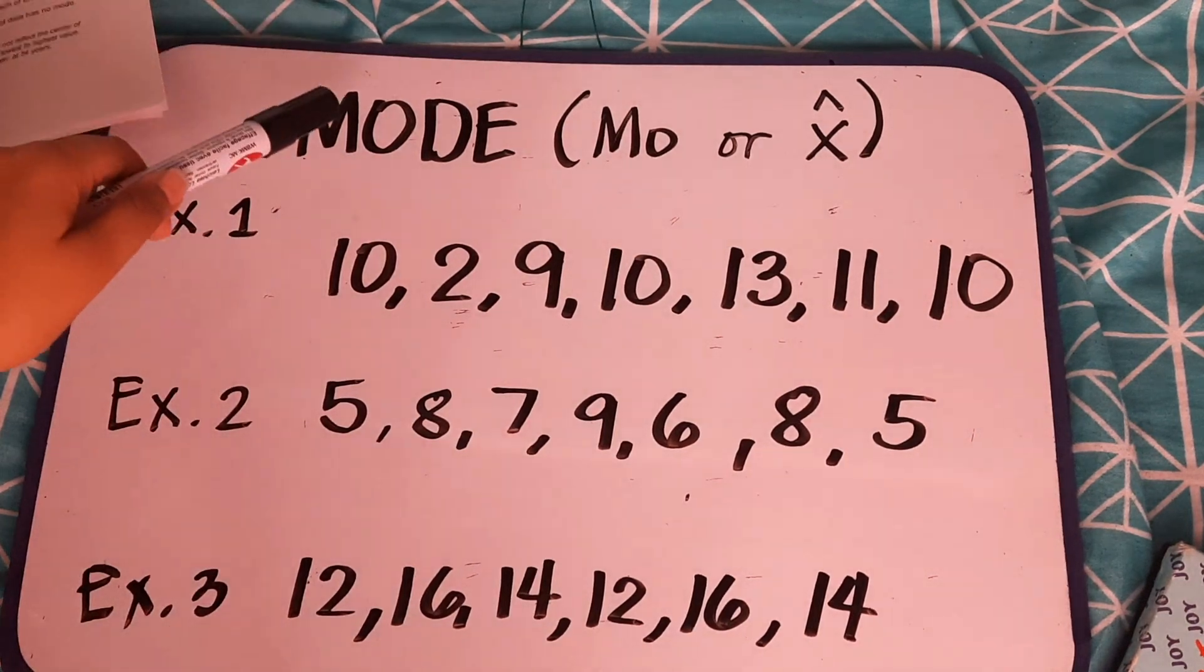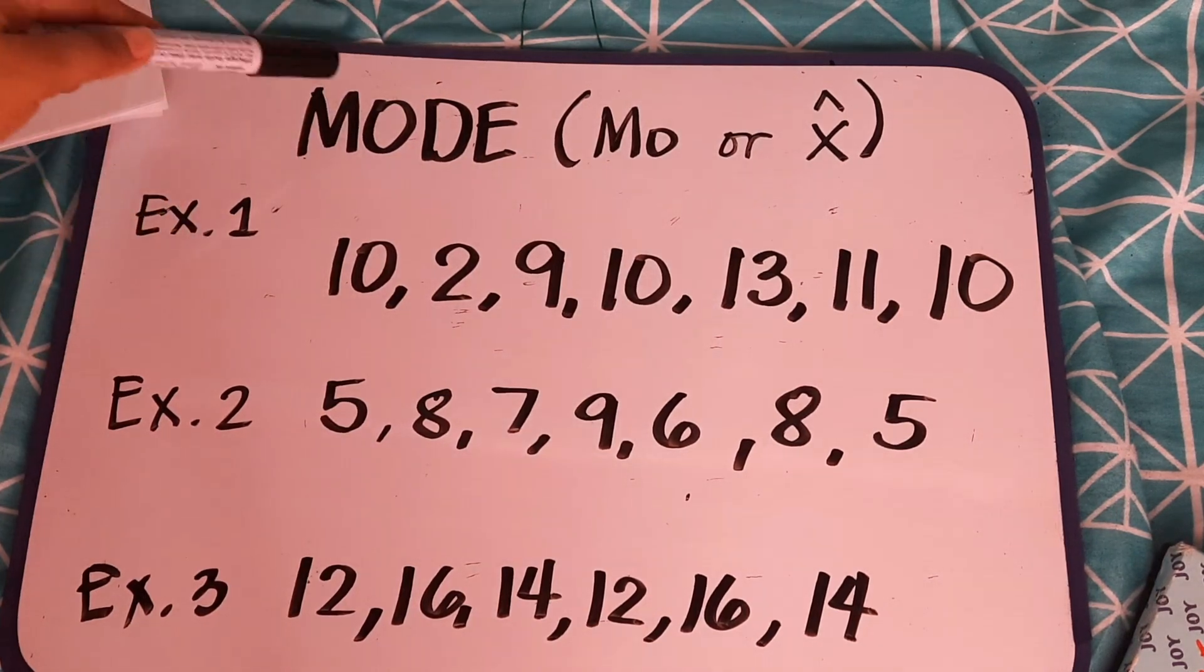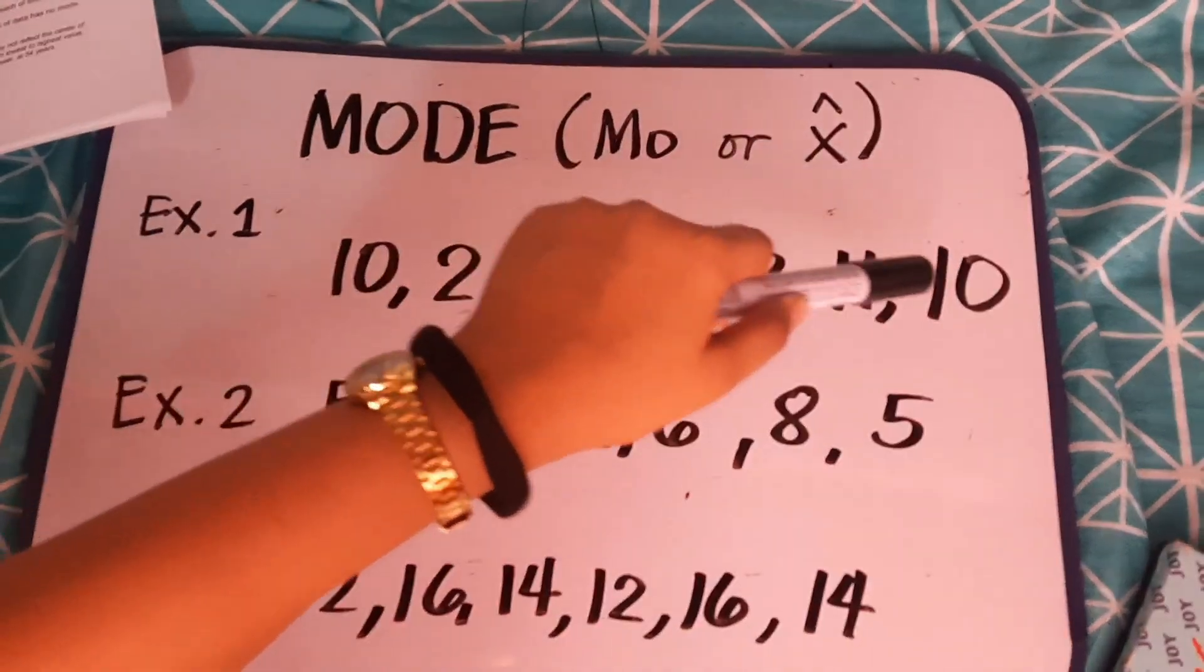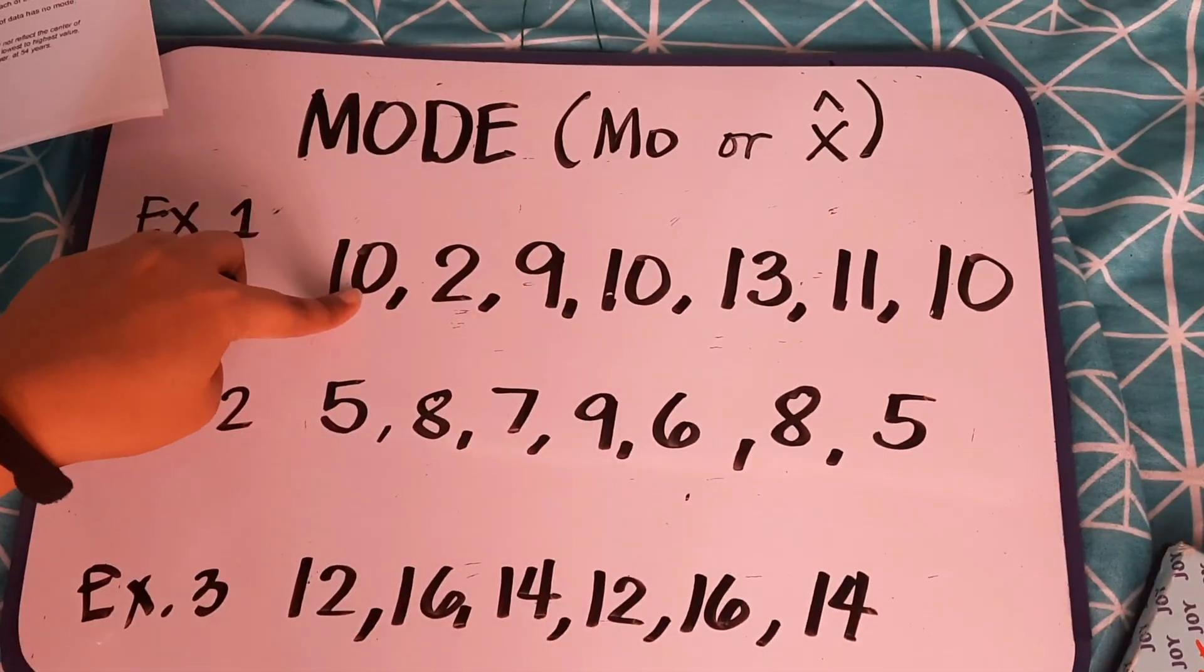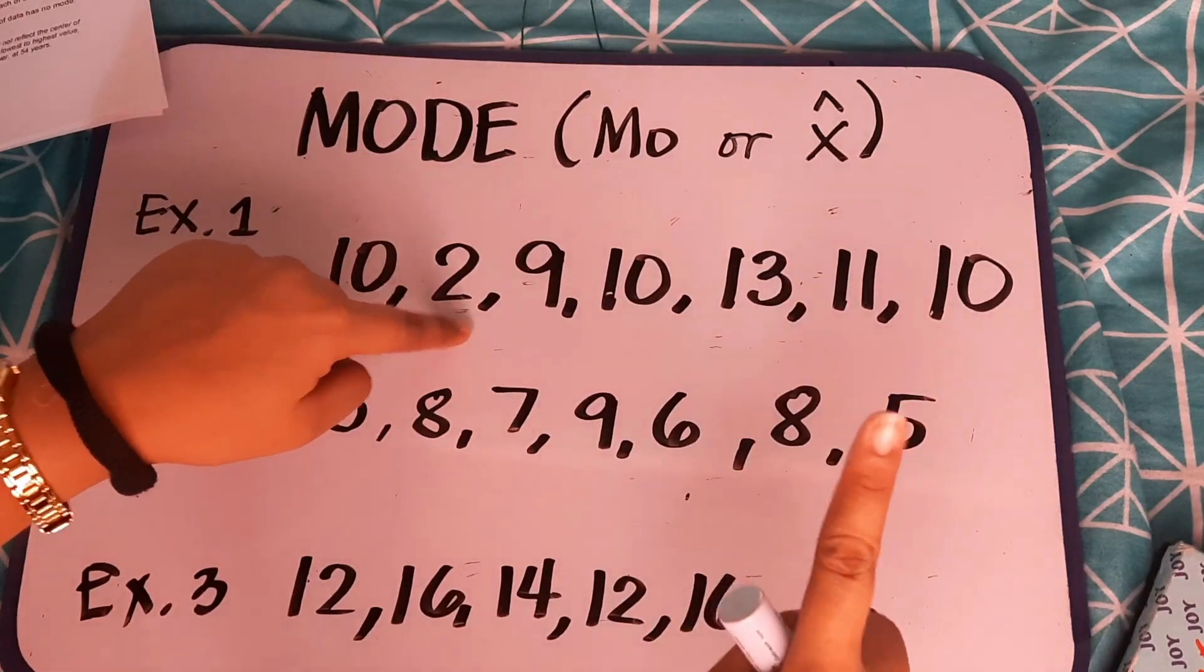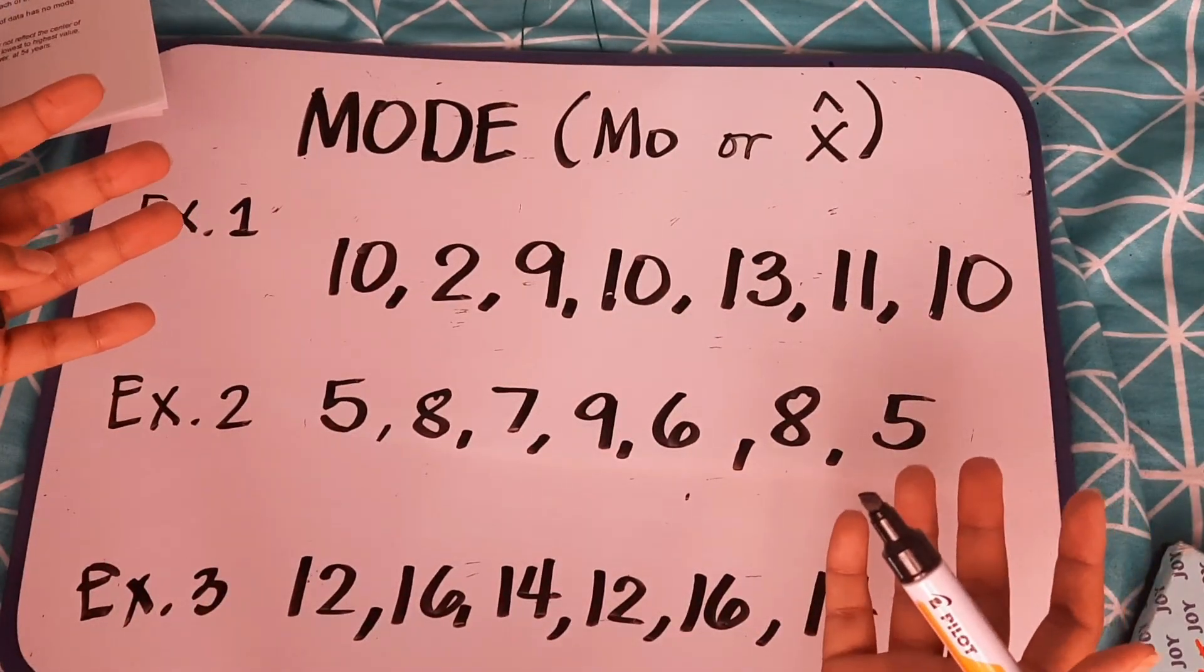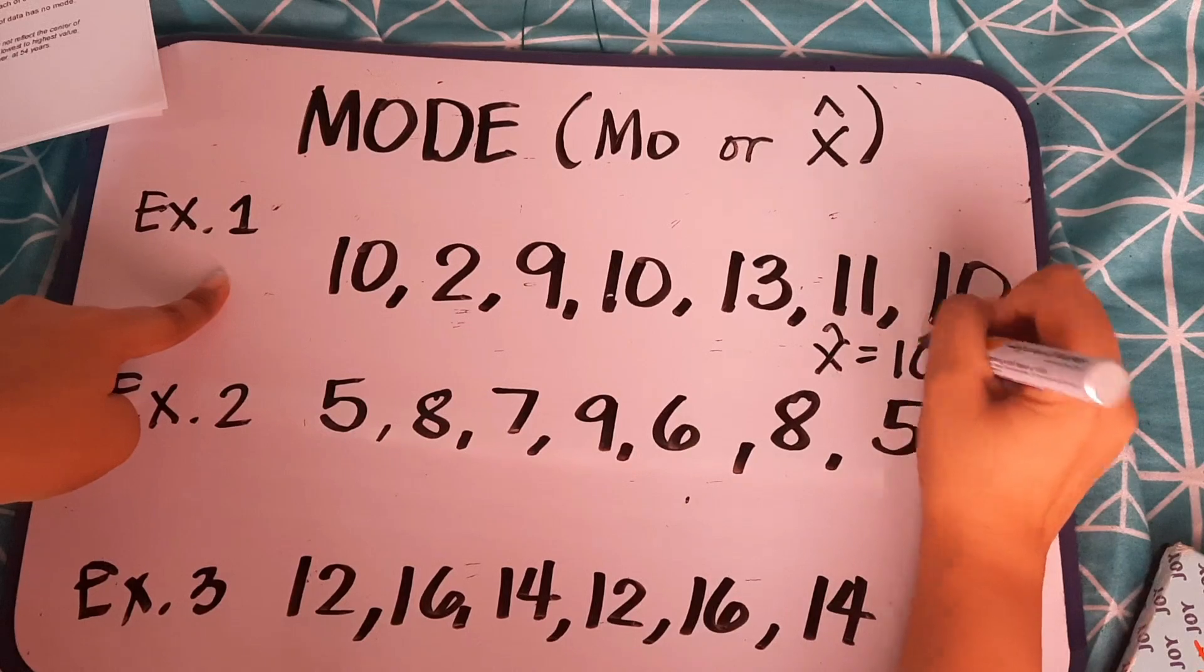Now, let us have the mode. Mode is the measure of value which occurs most frequently in a set of data. Ang symbol natin dyan is MO or this one. Meron akong tatlong example dito. For example, number 1: 10, 2, 9, 10, 13, 11, 10. Alin dyan ang mode? Ilang beses bang nag-appear ang 10? 1, 2, 3, tatlong beses. Eh yung 2 ba? Isang beses lang. Yung 9, 13, at 11, isang beses lang din. So, alin dyan yung may pinakamaraming beses? Yung number 10. So, ibig sabihin, sa example number 1, ang ating mode is 10.